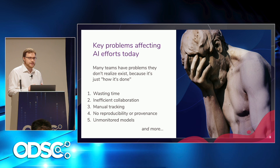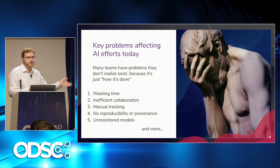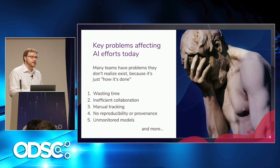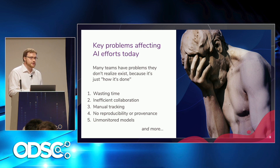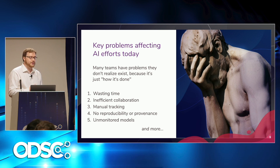Another problem is a lack of reproducibility and provenance — not being able to reproduce a model that a colleague who's now left the company created nine months ago because things have moved on: the data's changed, we've got new versions of Python libraries, and so on. Another problem is that a lot of models go into production and then aren't properly monitored, because it's actually harder to monitor models than it is to monitor microservices and regular software. And another one is that a surprising number of companies are just really struggling to deploy models at all — getting models into production is a major blocker in some big companies we've spoken to.